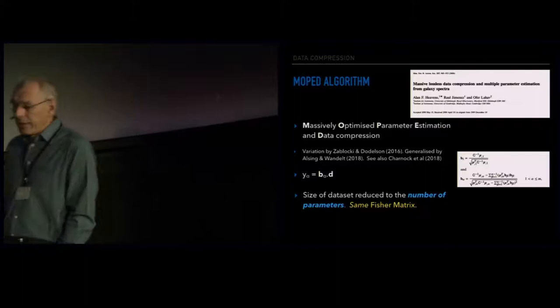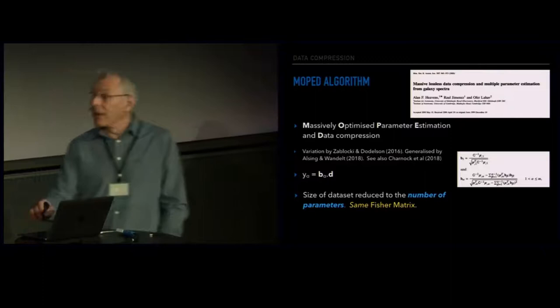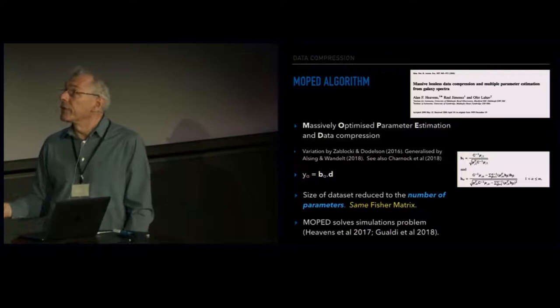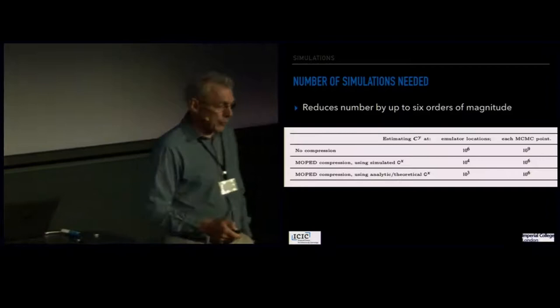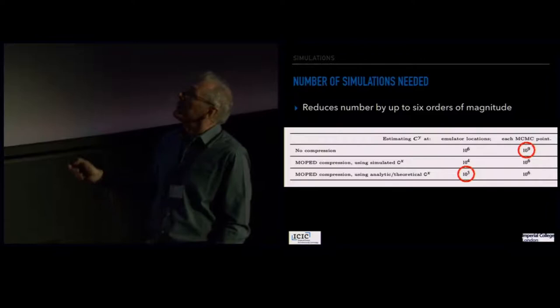It's quite remarkable and remarkably powerful. In light of the challenges coming with Euclid and LSST, this data compression has a new lease of life. It solves the simulations problem because the size of the data set P has been reduced to something manageable. Looking at the number of simulations you might need, in the worst case you might require something like a billion simulations — that can be reduced to about 1,000 by using this and a few other tricks.